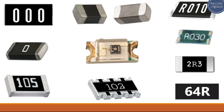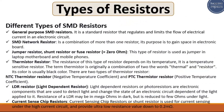This is a jumper resistor or a fuse resistor — zero ohms. As you can see, we have triple zero, or here we have one zero; this is a zero-ohm resistor. And here we have a standard resistor: the first digit, the second digit, and the third digit means five zeros — so this is a one mega-ohm resistor.